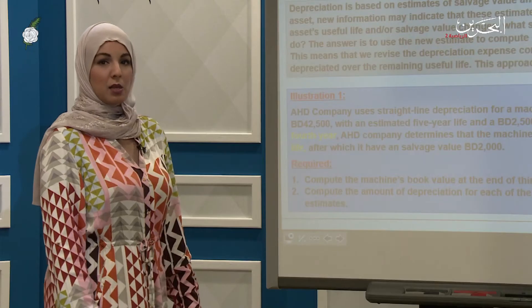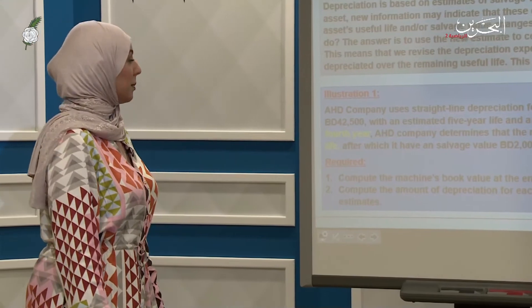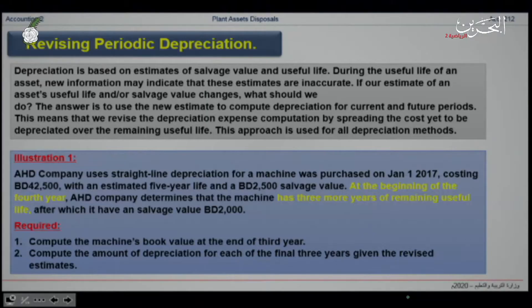Let us start with reversing periodic depreciation. In our example, AHD company used a straight-line depreciation method for a machine purchased in January. The cost is $42,500, with an estimated useful life of 5 years and a $2,500 salvage value.